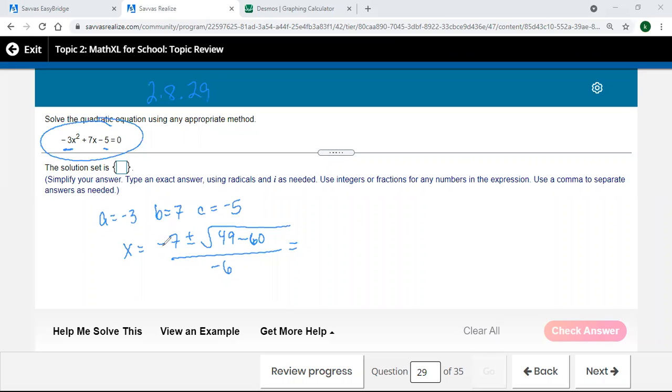So if you do this, the negative 7 over the negative 6 is a positive. And then because the second part has a plus or a minus, you're going to have both. And 49 minus 60 is a negative 11.